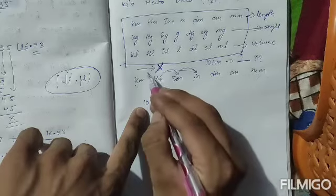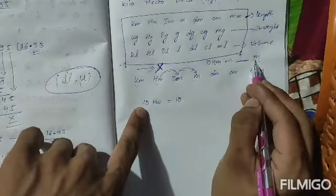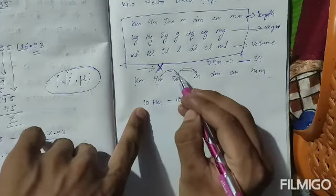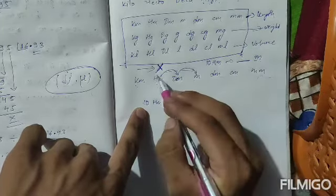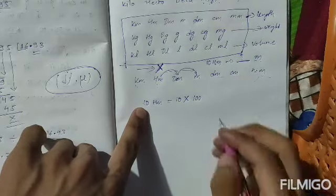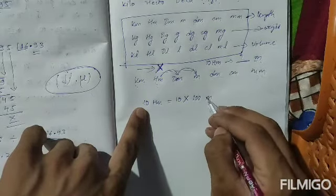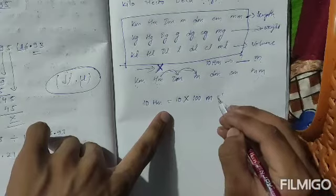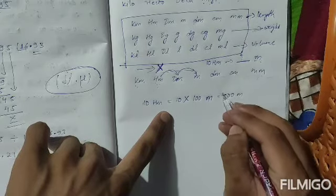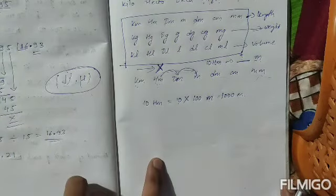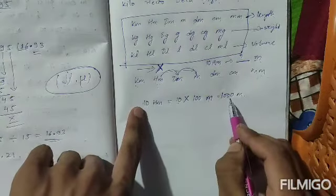So 10 hectometer converted to meter: we are moving left to right, two steps, so multiply by 100. 10 × 100 = 1000 meters. Therefore 10 hectometers equals 1000 meters.